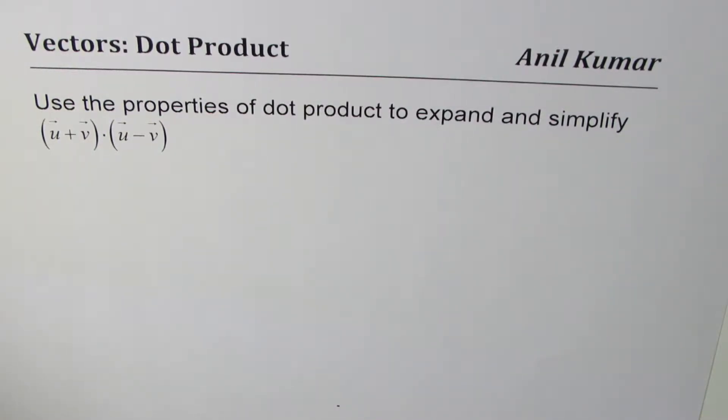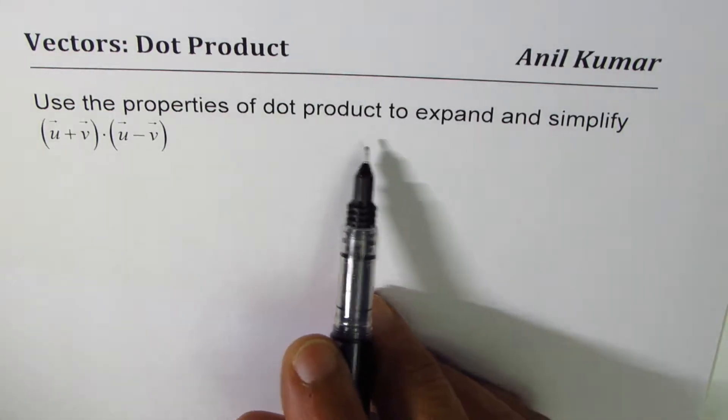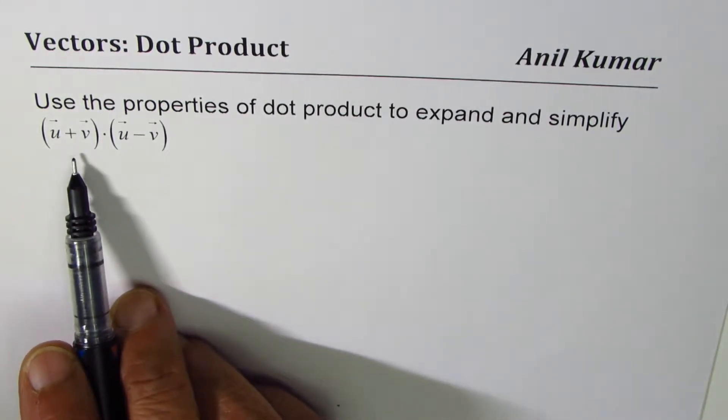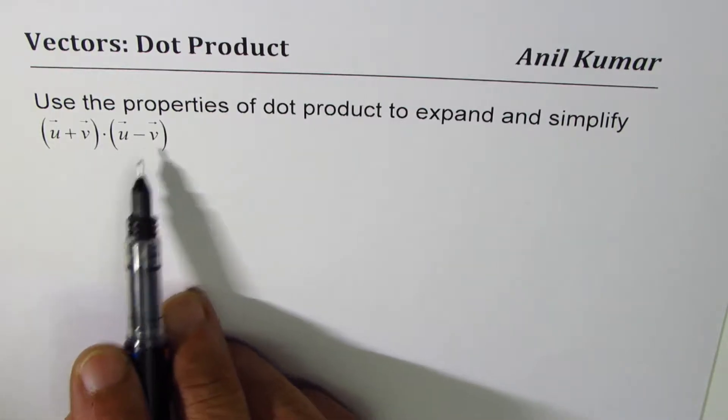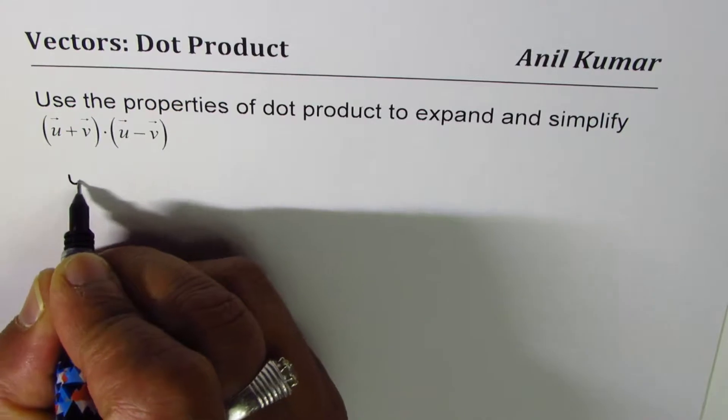I'm Anil Kumar. We'll do dot product of vectors using their properties. The question here is: use the properties of dot product to expand and simplify sum of vectors dot product with their difference. So let me copy this.